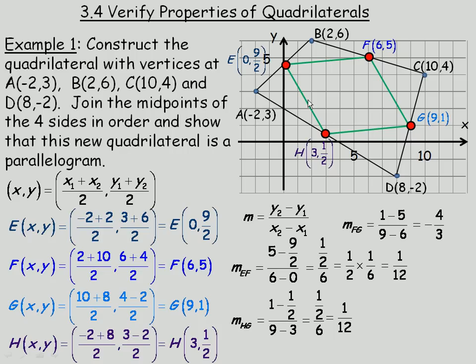Now the last side to investigate is EH. And so 1/2 minus 9/2 in the numerator. 3 minus 0 in the denominator. Now 1/2 minus 9/2 would be -8/2. And -8/2 is the same as -4. So in the numerator this does simplify to -4. And of course 3 minus 0 is 3 in the denominator. So those two sides have the same slope and are also parallel.